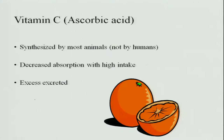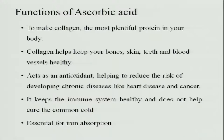The next vitamin is vitamin C, also commonly called ascorbic acid. This vitamin is synthesized by most animals, but in humans it is not synthesized, so we must supplement it through diet. With high intake, absorption decreases, and since it is a water-soluble vitamin, excess amounts are excreted from the body. Ascorbic acid is very important in the formation of collagen, which is the most abundant protein in our body, and collagen helps to keep bones, skin, teeth and blood vessels intact.